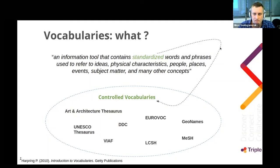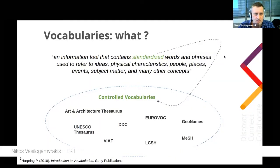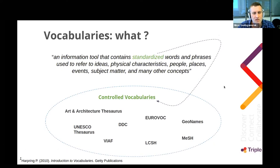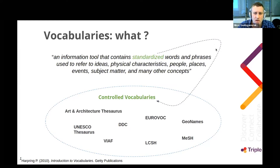We will begin with the definition of vocabularies. Adopting Harping's definition, a vocabulary is an information tool that contains standardized words and phrases used to refer to ideas, physical characteristics, people, places, events, subject matter, and many other concepts. We speak about standardized terms that make a vocabulary controlled — they do not include natural language terms. These terms are concepts linked to each other with a series of relationships, bringing up a whole network of concepts together.